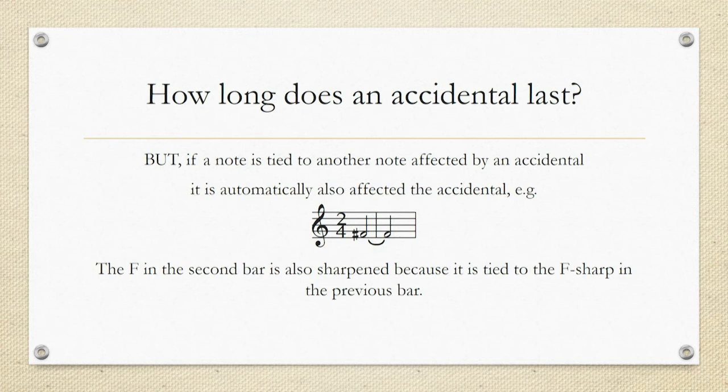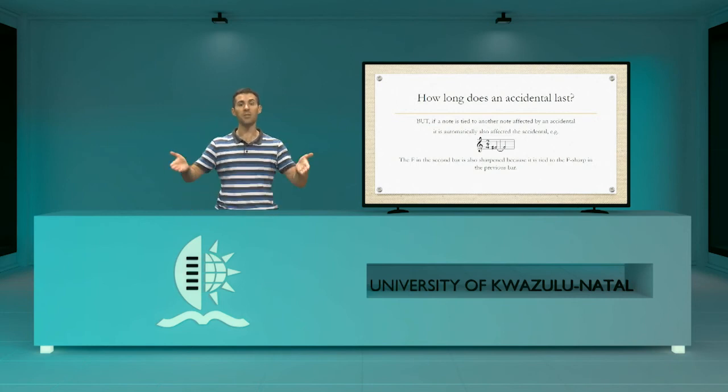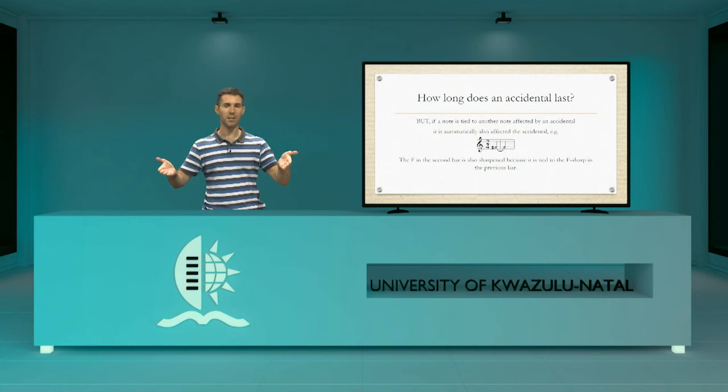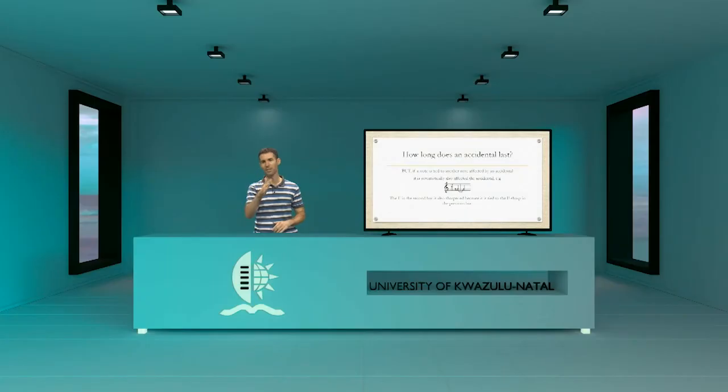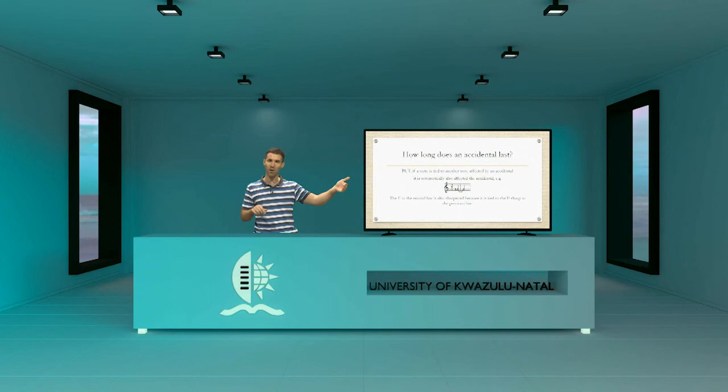There is one exception to this rule. If notes are tied together across a bar line, the accidental carries over. For example in 2/4, if the composer wants a note worth 4 beats starting on F sharp, you tie it over into the next bar. The first note is F sharp. Normally the second F after the bar line would be F natural, but because it has a tie connecting it, it is also considered F sharp and you don't need to write the sharp again. So when two notes are tied across the bar line, if the note before has a sharp or a flat you don't need to rewrite it in the next bar.